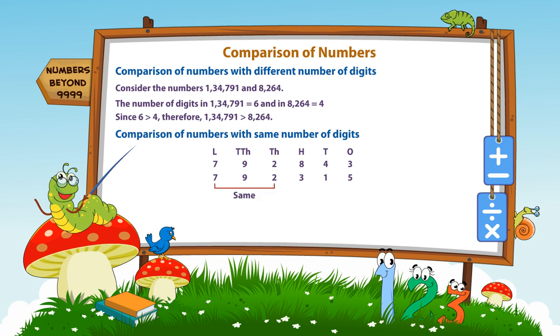So, we compare the face values of the digits at the hundreds place. Since 8 is greater than 3, so 7,92,843 is greater than 7,92,315.